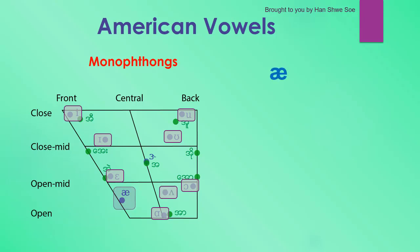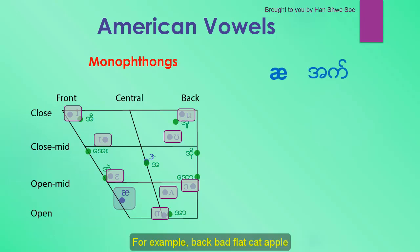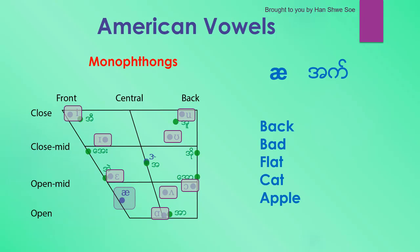The next monophthong — the mouth is more open than A and it's just a bit longer. It's a wide open A. For example: bag, bat, flat, cat, apple.